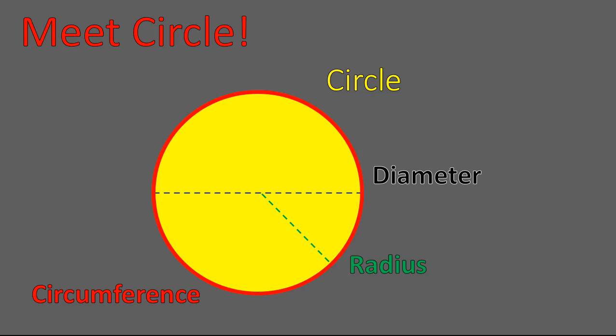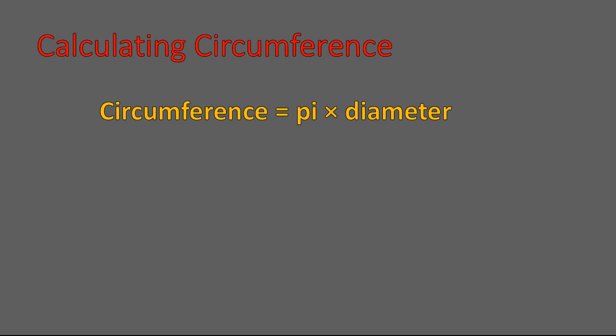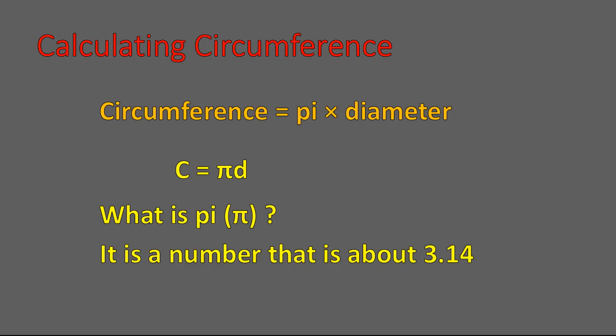What we're going to do today is calculate the circumference. To calculate the circumference, you need to have the diameter — the measurement of the diameter. The equation is: circumference equals pi times the diameter. What exactly is pi? It's a number that's a ratio of the circumference and diameter of a circle, but more importantly for us, all we need to know is that it's a number that is about 3.14. So instead of writing circumference equals pi times D, we are going to write circumference is approximately equal to 3.14 times the diameter. That will be our equation.